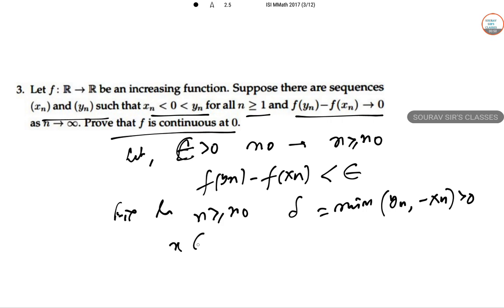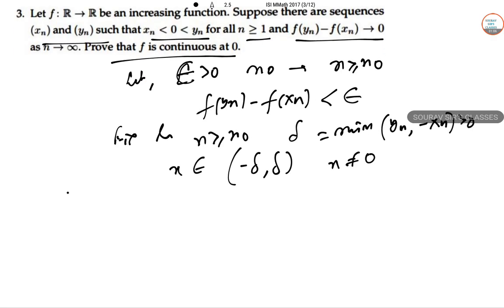Consider an arbitrary x in (-δ, δ) with x ≠ 0. If x > 0, then xn₀ < 0 < x < δ ≤ yn₀. Since f is increasing, this gives f(xn₀) ≤ f(0) and f(x) ≤ f(yn₀).